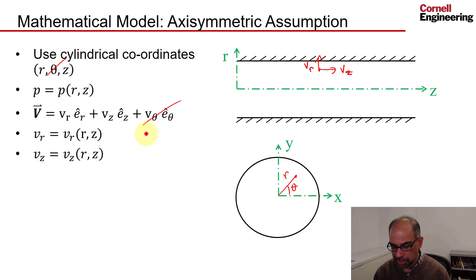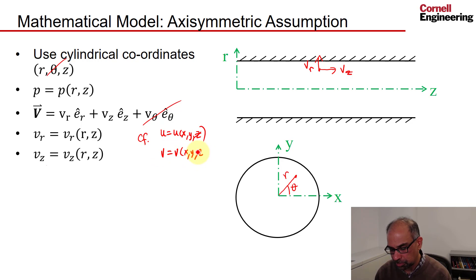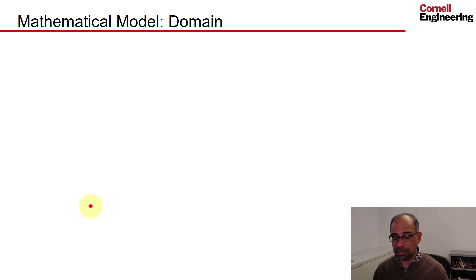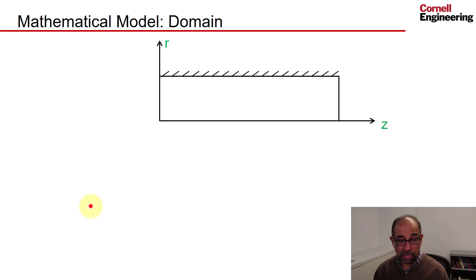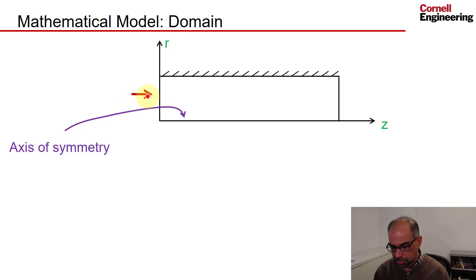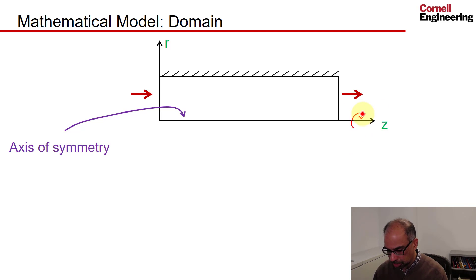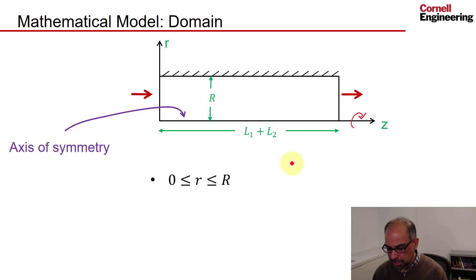At any point we can have an axial velocity and a radial velocity, and each of those velocity components depends only on r and z. Compare that to the 2D Cartesian case where u is a function of x and y and v is a function of x and y — it's analogous but a bit more complicated. With the axisymmetric assumption, the domain over which we solve the governing equations turns out to be a rectangle, with the axial coordinate along one axis, the radial coordinate along the other, the axis of symmetry, the inlet, the outlet, and the wall. Revolving that rectangle 360 degrees about the axis gives the full pipe geometry.